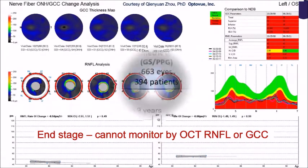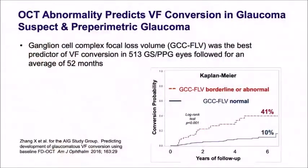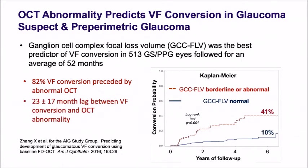Let me show you some data about conversion, progression, and prediction of progression. Here we're looking at people who are glaucoma suspects or preparametric glaucoma, so they have normal visual fields. In these people, the ones who converted were much more likely to have an abnormal OCT. That abnormal OCT was more likely to be the macular OCT than the nerve fiber layer, but both predicted future conversion of the visual field from normal to abnormal.